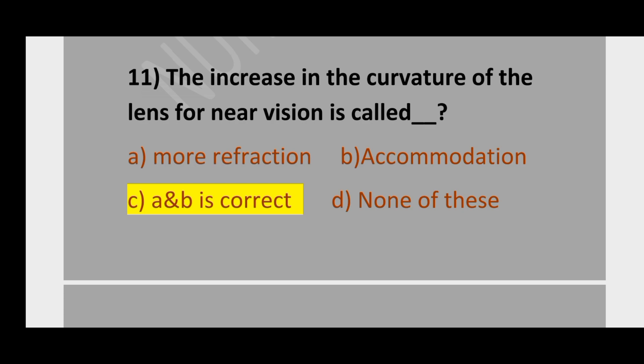Question number 11. The increase in the curvature of the lens for near vision is called: option A, more refraction; option B, accommodation; option C, A and B is correct; option D, none of these. Both A and B is the correct option.